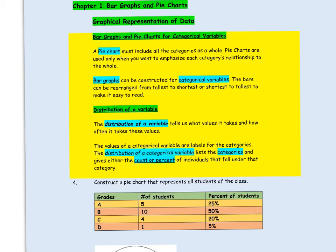Pie charts and bar graphs can be used to represent categorical variables. These are the two examples we're going to see in this part: pie charts and bar graphs. But before we get into pie charts and bar graphs, we need to understand what the distribution of a variable is.